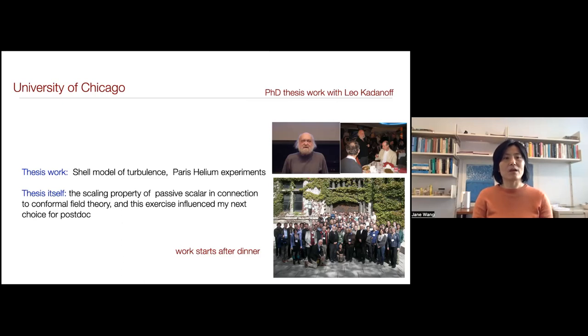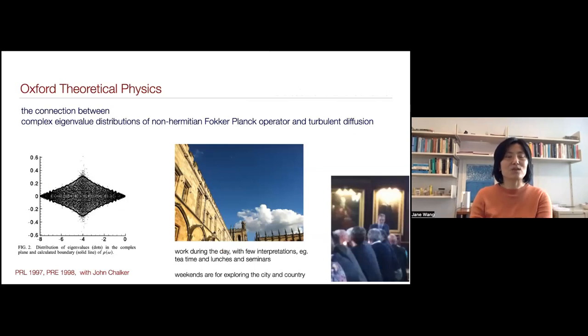So for my postdoc, I split between Oxford and Courant. So I first went to Oxford, in part influenced by this last bit of exercise, which I'll explain. And I should also say, given all the excitement I was telling you about, the work really starts after dinner. So I went to Oxford and I worked with John Chalker and was an independent postdoc. So I talked to a few people. And the reason I was interested in going there is precisely because trying to see if there's some connection between what people have worked on in quantum Hall effect. There's some techniques being developed, understanding their transport property to the transport property of passive scalars, which is a classical phenomena.